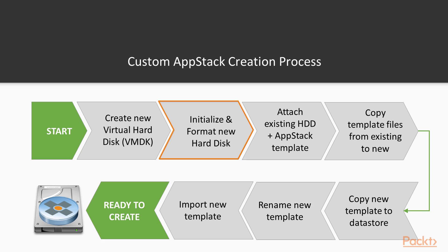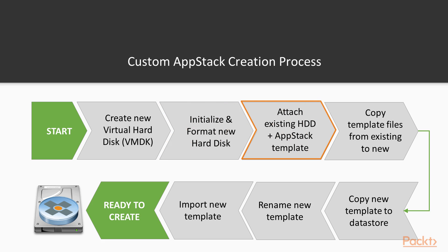We then initialize and format that new virtual hard drive as we would with any other hard drive that we would create. Next, we're going to attach an existing hard drive, and this existing hard drive contains the AppStack template — the files that help build what an AppStack looks like, including the script files for mounting. What we're then going to do is copy those template files from the existing drive onto the new drive that we've just created.